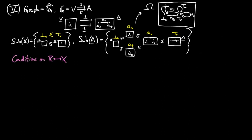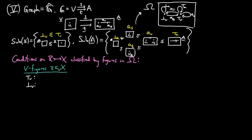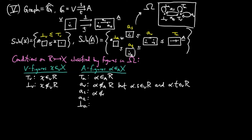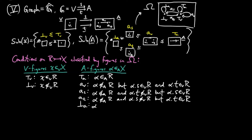The conditions on a subgraph R of X classified by figures in Ω comes in two levels. For v-figures, with little x as a v-element of X, either x is a v-element of R or it is not. For a-figures, with alpha as an a-element of X: either alpha is an a-element of R, or alpha is not an a-element of R but the source and target of alpha are v-elements of R, or alpha is not in R and the target vertex is not in R but the source vertex is a vertex of R, or alpha is not in R and the source vertex is not in R but the target vertex is a v-element of R, or alpha is not an arc in R and neither the source nor target vertices of alpha are vertices in R.